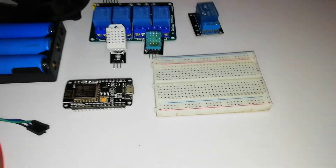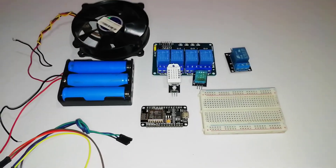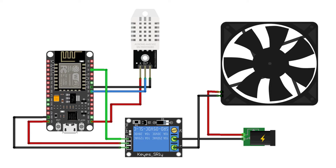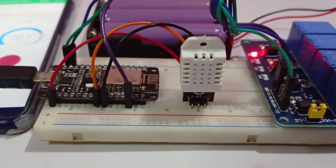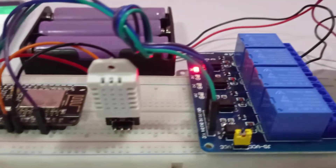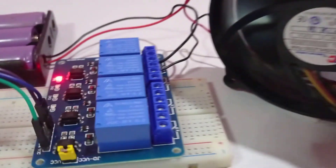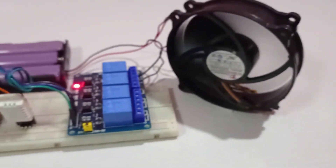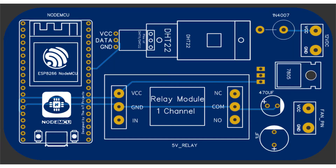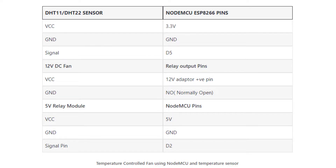Now, without any further delay, let's get into the circuit connection. The circuit diagram of the IoT-based temperature control system is very easy to understand. Here, we are controlling the relay using the ESP8266 and DHT11 or DHT22 sensor for simple automation. You can easily assemble the circuit following the schematic diagram and pin connection table, which will help you interface all the components to the NodeMCU ESP8266.